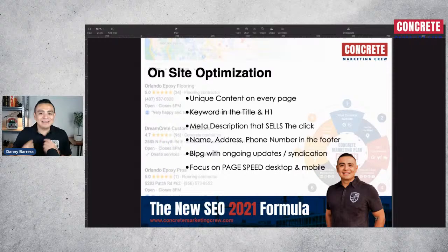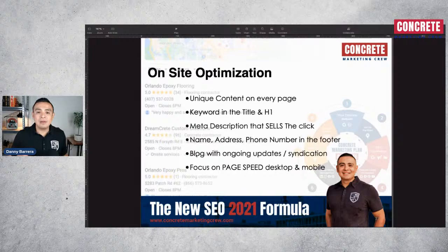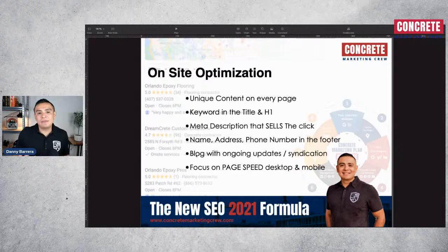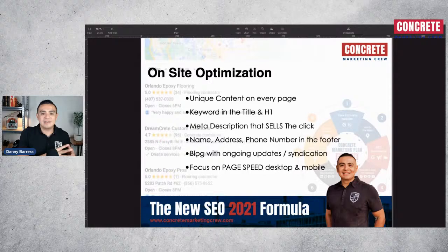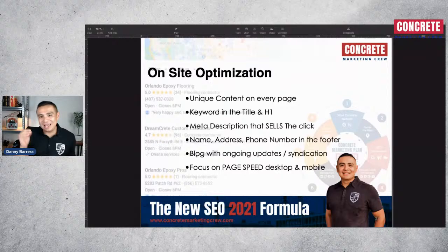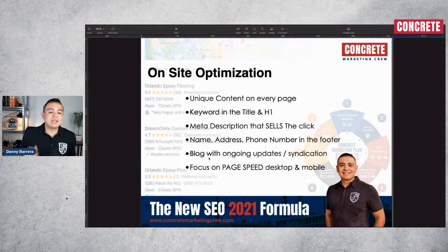A blog with ongoing updates and syndication — we consider the blog part of on-site optimization because with ongoing updates we're letting Google know every single month as we publish new content. When you start creating content that's optimized and relevant and you link those blog posts to specific service pages or service area pages, Google will start giving you more credibility for that specific keyword. We have an entire plan for content building with the right structure that gets syndicated all across the web in a unique way that no competitor is doing.